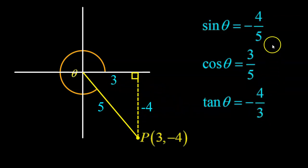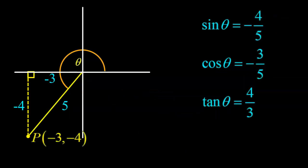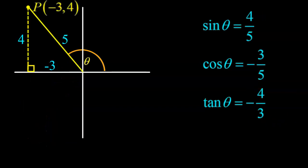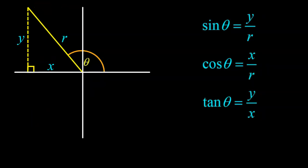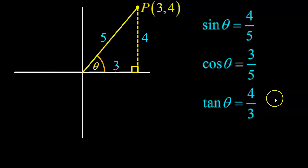And you'll notice here that only cosine is positive, whereas in the third quadrant, only tan is positive, and in the second quadrant, only sine is positive. And I think I pointed out earlier that all of them are positive in quadrant 1.